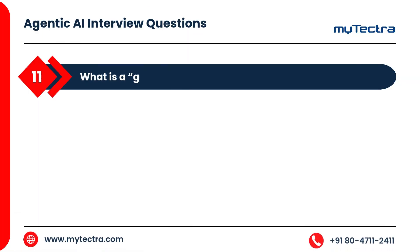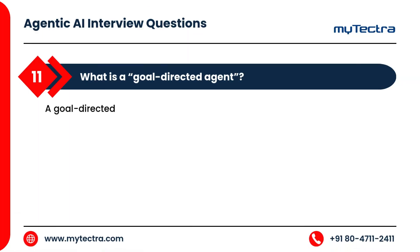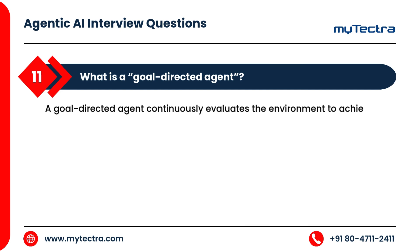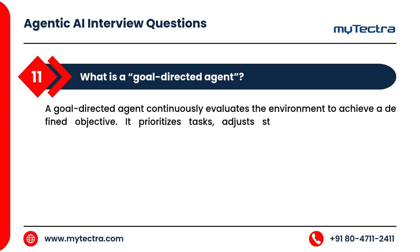What is a goal-directed agent? A goal-directed agent continuously evaluates the environment to achieve a defined objective. It prioritizes tasks, adjusts strategies dynamically, and measures outcomes, similar to how humans pursue goals with awareness and adaptation.